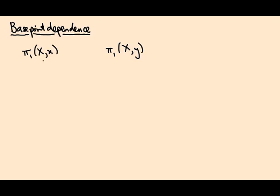So by now we've seen how to associate to a space, capital X, and a base point, little x, on that space, a group called π₁ of X and x, which consists of homotopy classes of loops in X based at the base point.